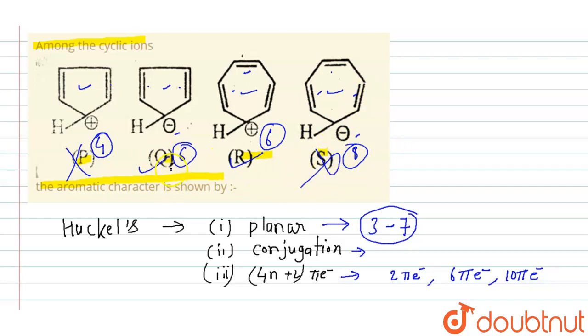So the aromatic character is shown by Q and R only.